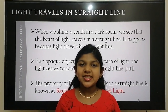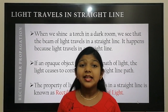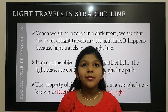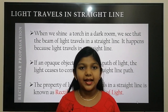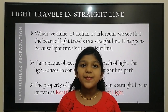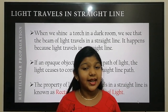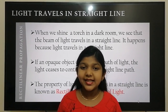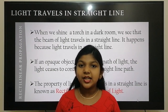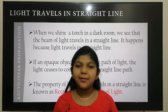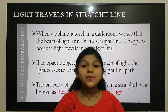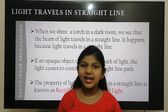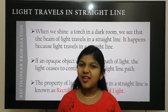Now we are going to see the property of light. When we shine a torch in a dark room, a beam of light travels in a straight line. This is because light travels in a straight line. But if any opaque object comes in the path of light, the light ceases to continue its journey on a straight line path. This property of light — that it travels in a straight line — is known as rectilinear propagation of light.